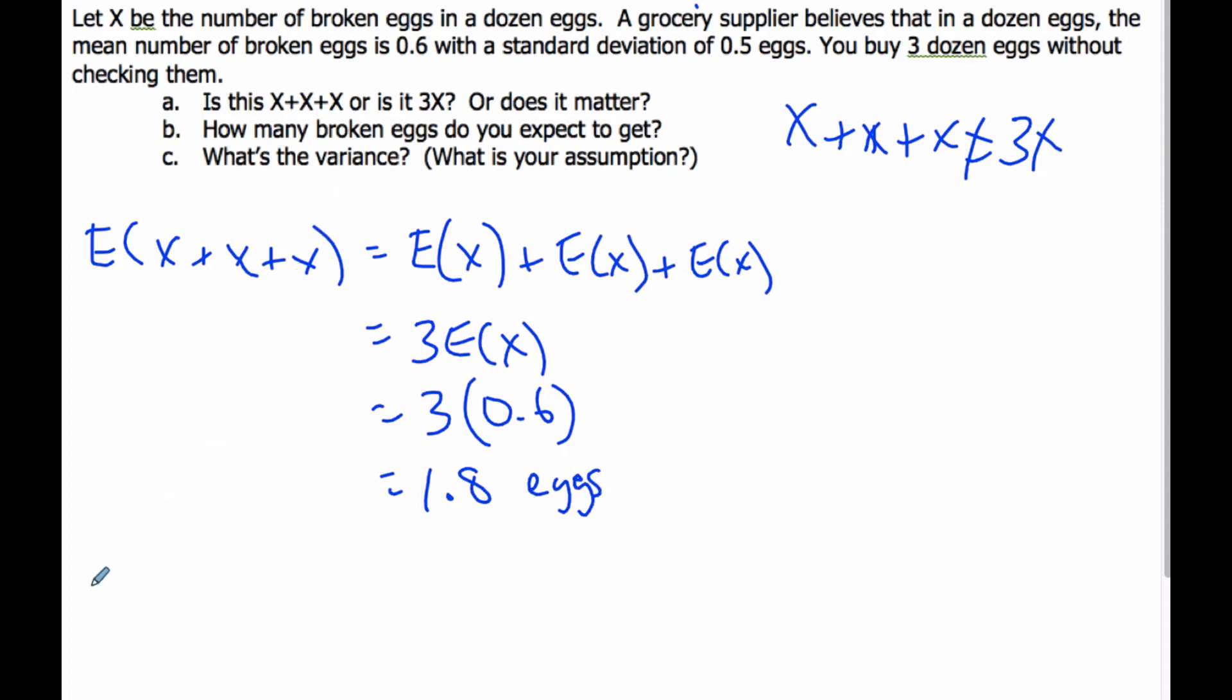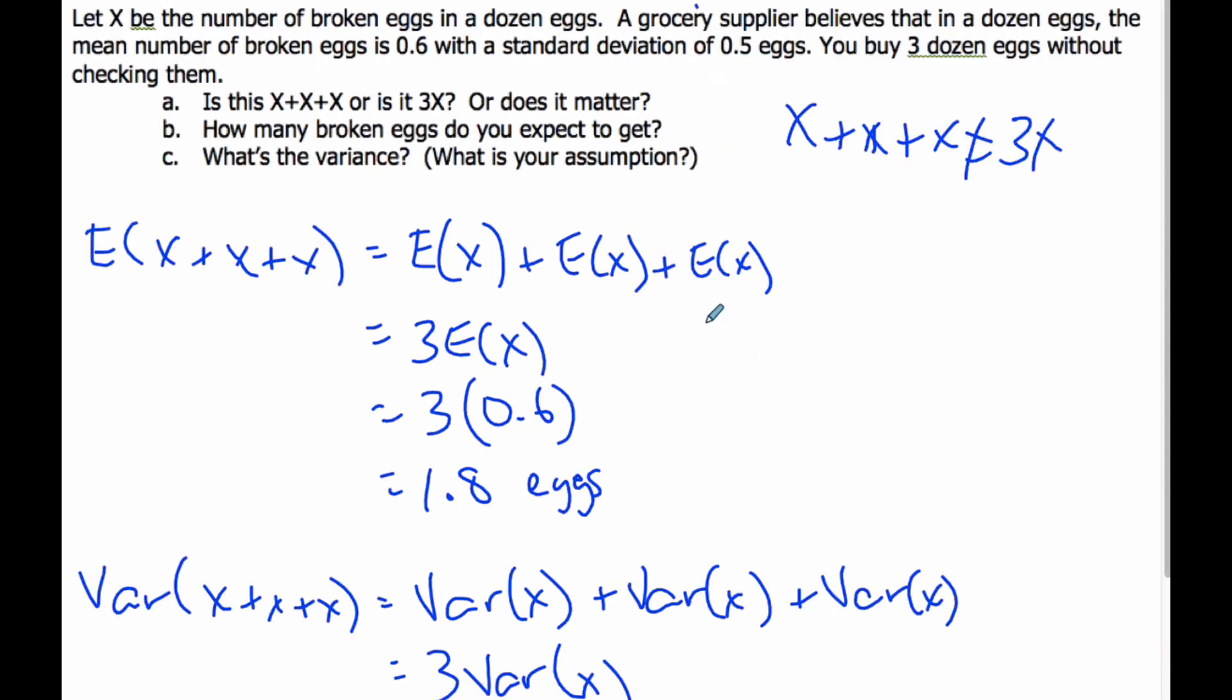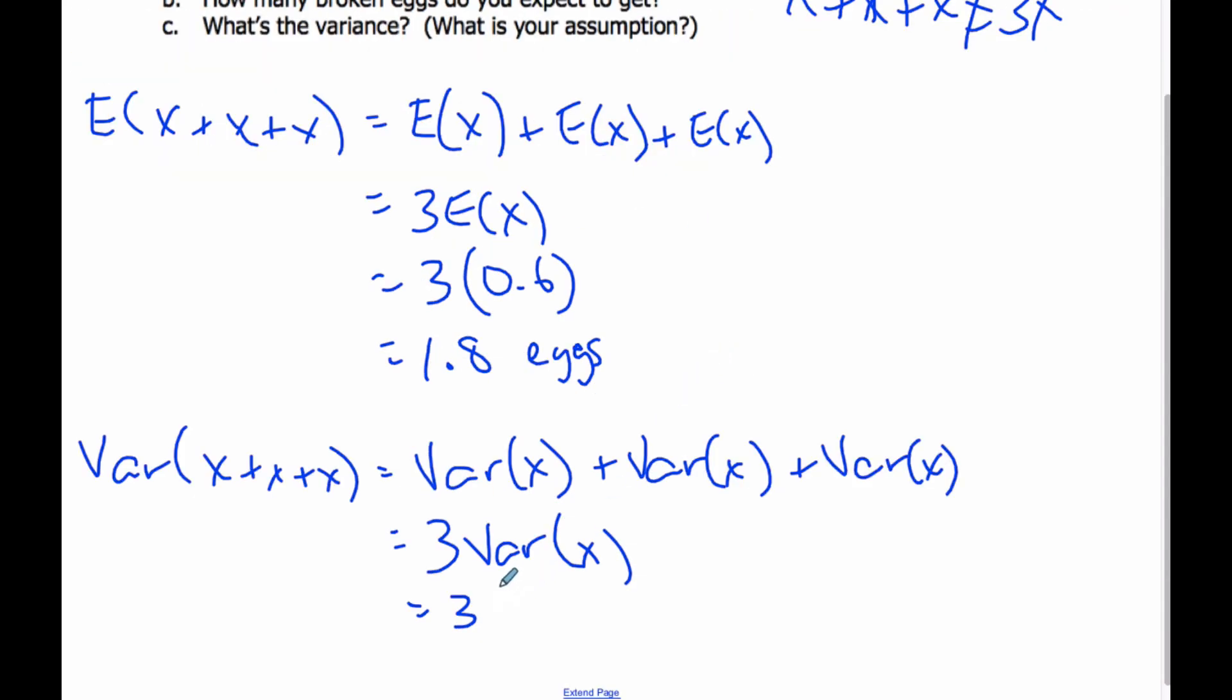What's the variance? Well, when I do my variance of X plus X plus X, that's going to be the variance of X plus the variance of X plus the variance of X, and I always add my variances. And again, I'm going through large detail here. Eventually, I just go straight to here. If I check, I know the standard deviation is 0.5, so the variance then is going to be 0.5 squared.